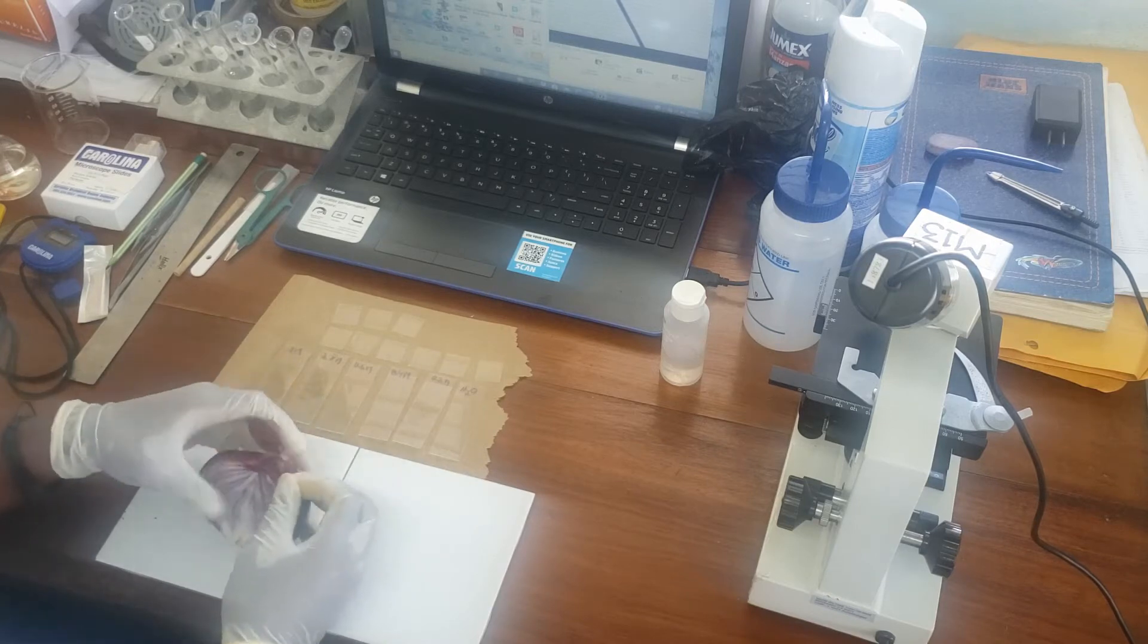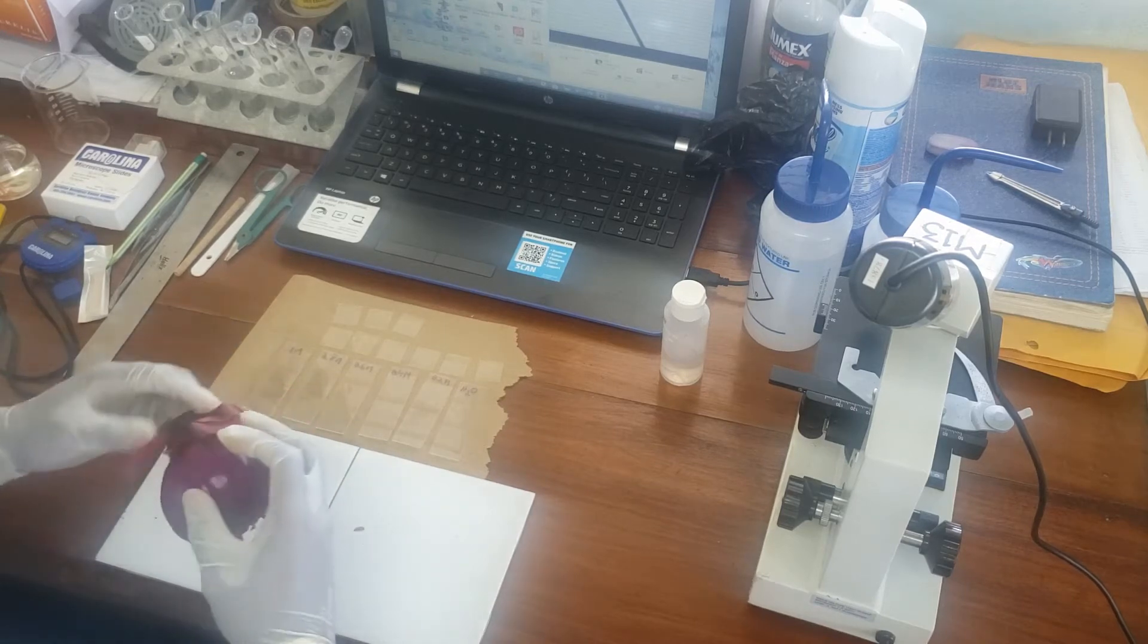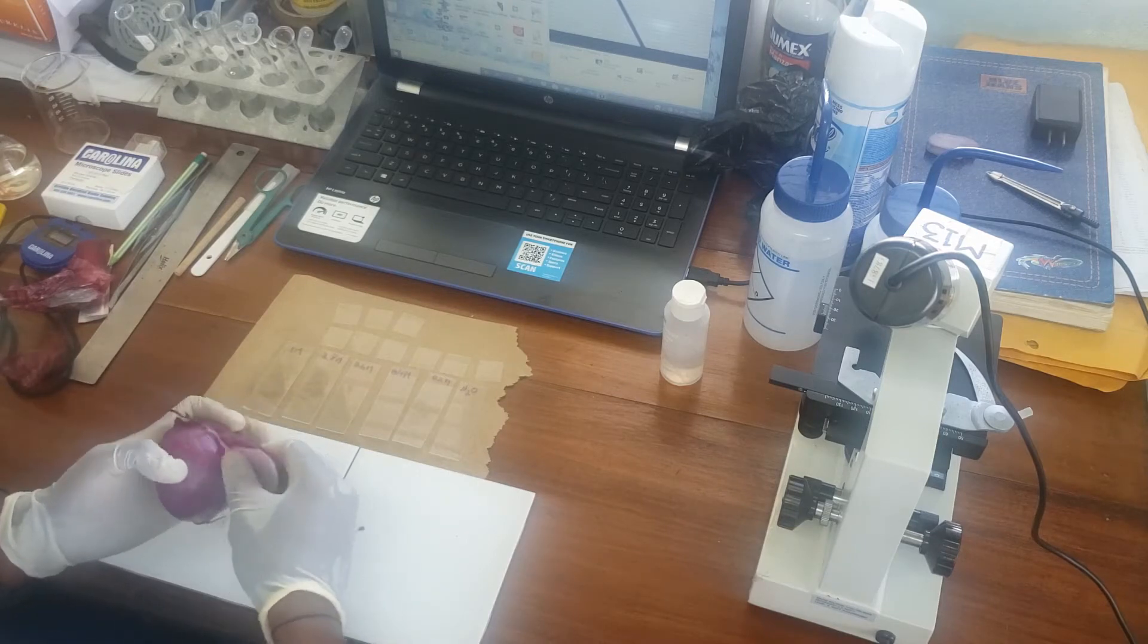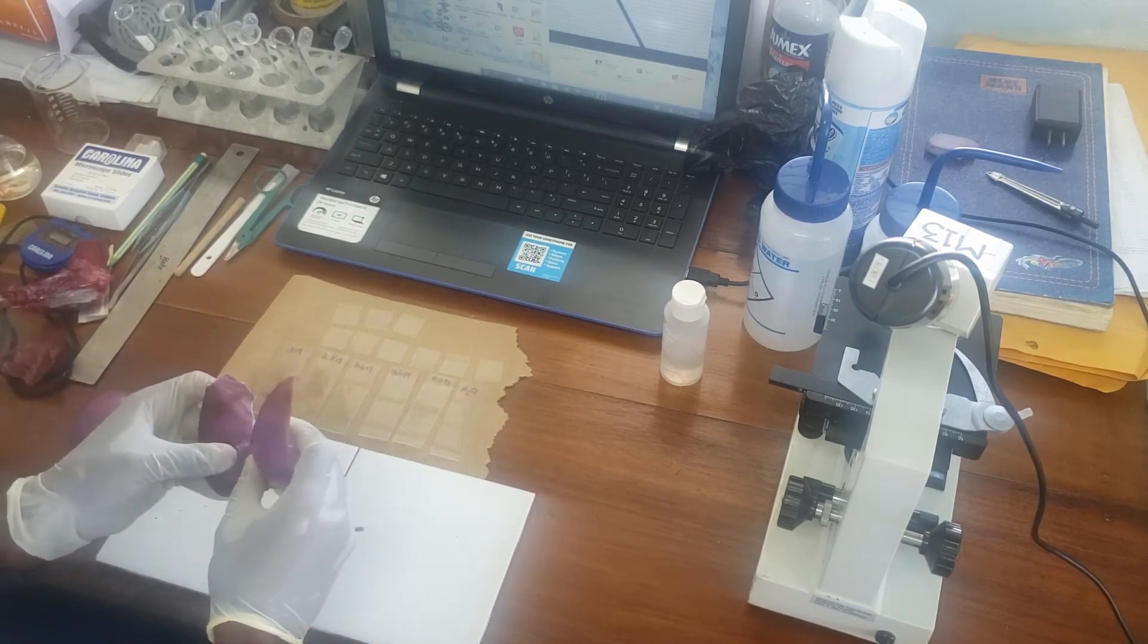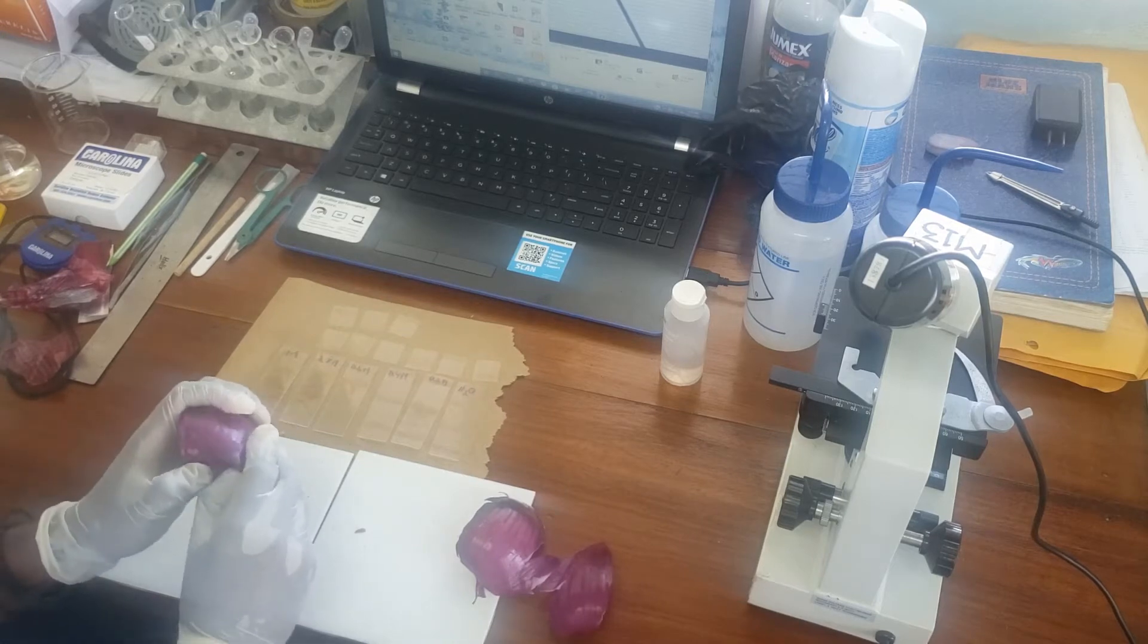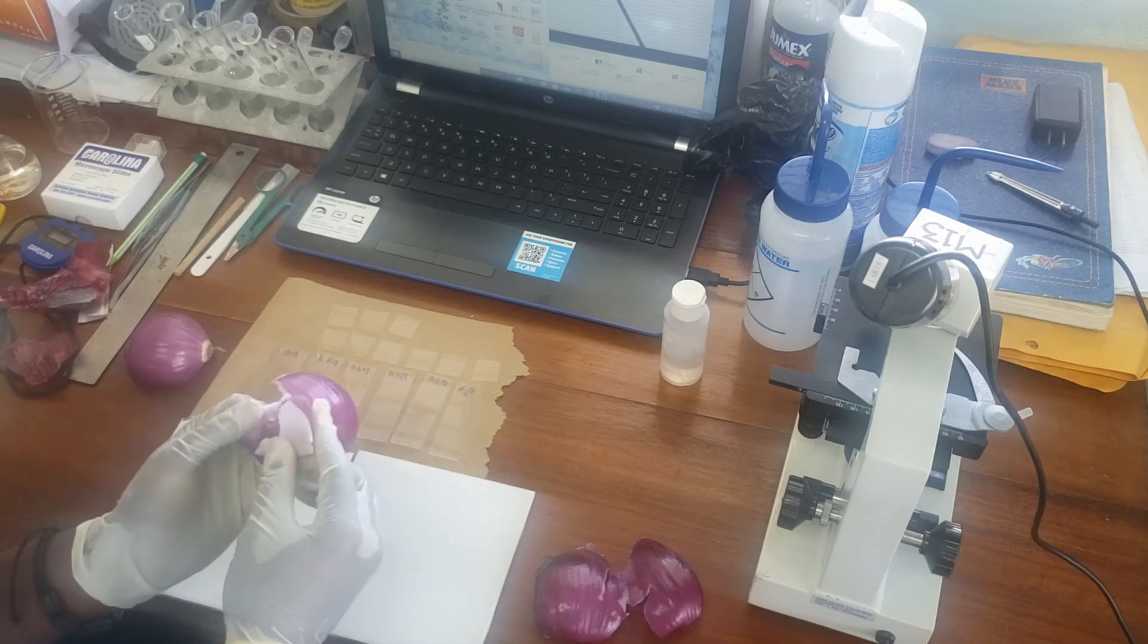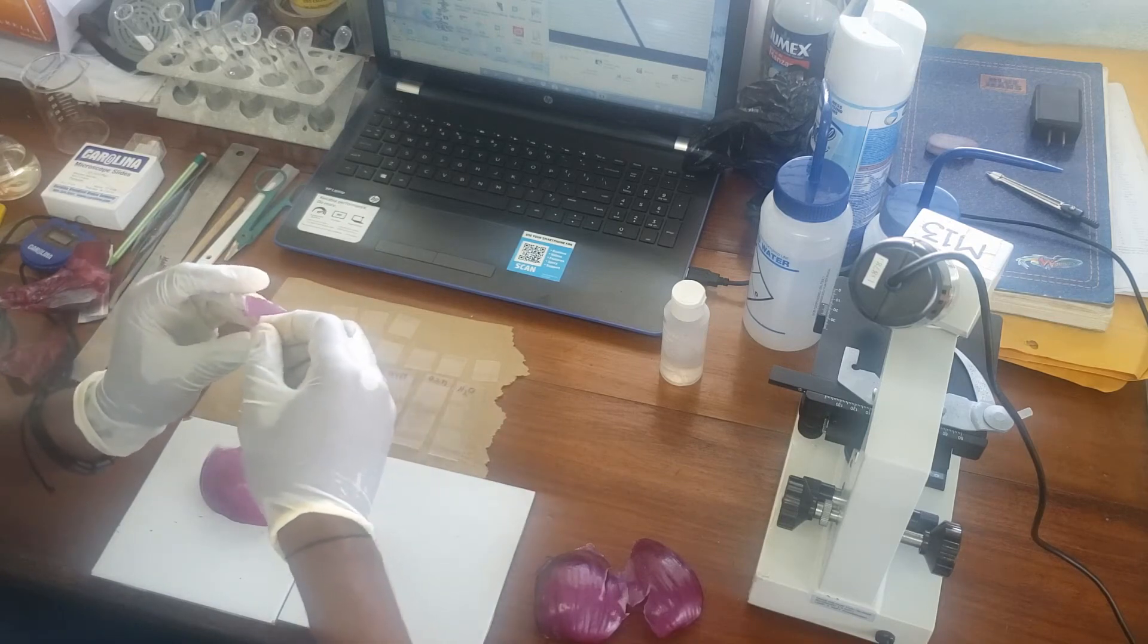So to begin with we just want to peel off some layers of the onion. Now red onion works best because it's already colored. So if we get to about this third layer, and then if we break and tear, we can start to get some of the epidermis separating.